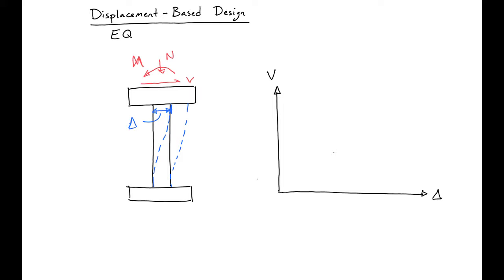So if we were to plot our delta versus shear, what we'd have is at the beginning we'd have a relatively large force with a small deflection while we're in the elastic zone. And then when we start to go inelastic, you'll see that with a relatively small increase in force we'll have a large displacement.